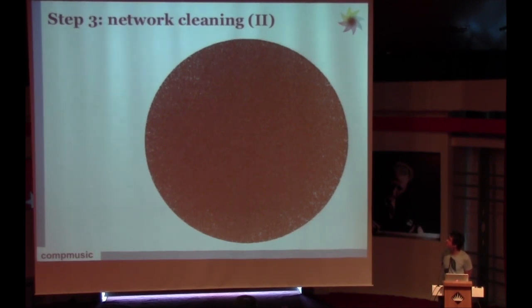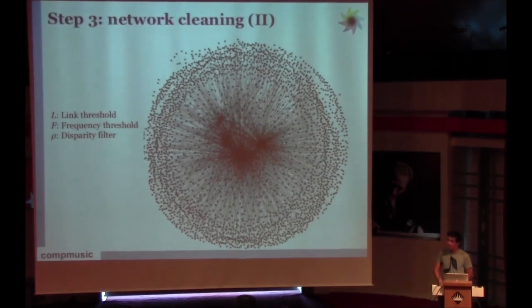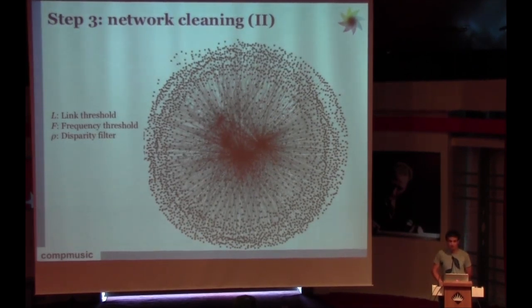Summarizing this third step, imagine that we have this dense network with a specific link and frequency thresholds. We can filter it to this. And when we apply the disparity filter, now the network seems nicer, right? And we can see the nodes and the network and the edges.